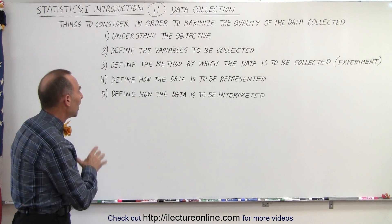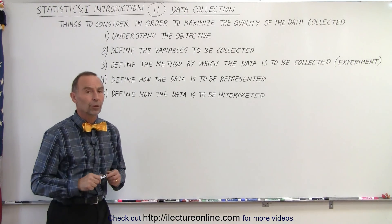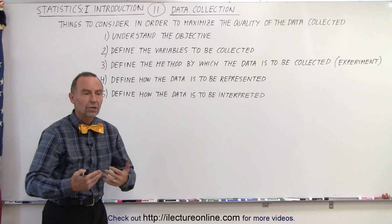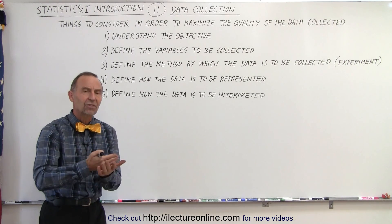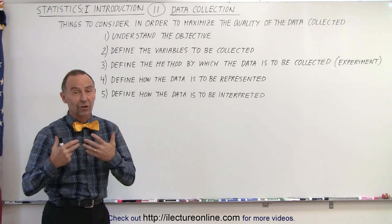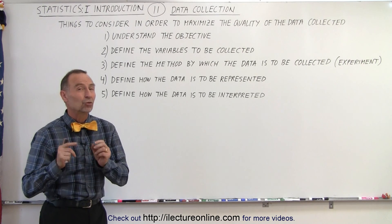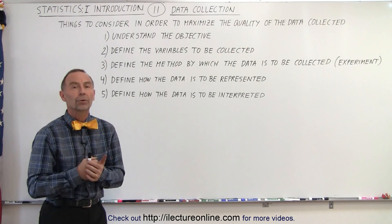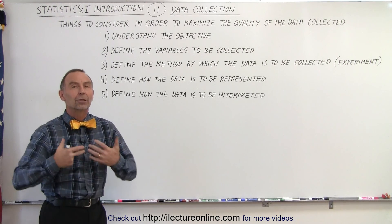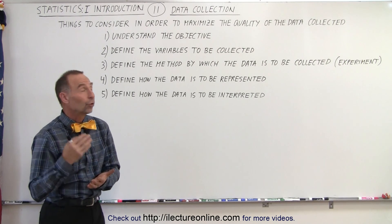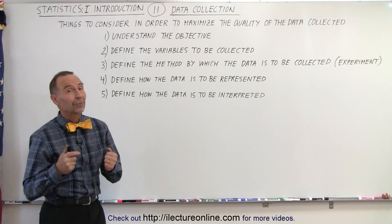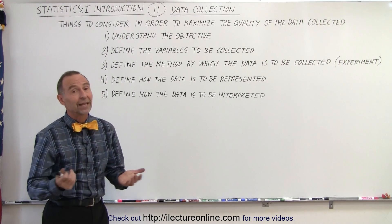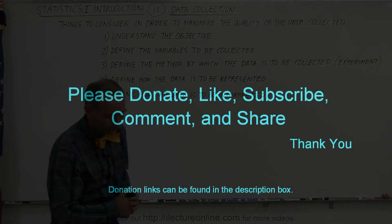And finally, define how the data is to be interpreted. If you're going to try to prove a certain point, you need to be able to interpret the data correctly, and that should be predetermined before you even start collecting it. It's really important that you understand how it's going to be interpreted so that you can collect it in the proper form. Those are very important aspects when it comes to data collection for a statistical experiment. That is how it's done. Thank you.